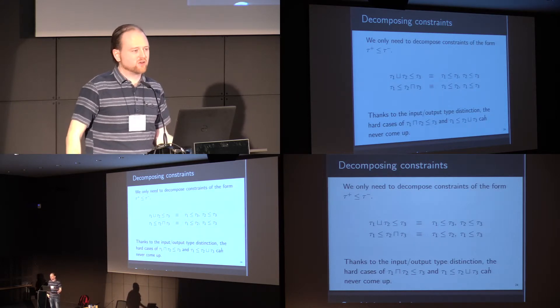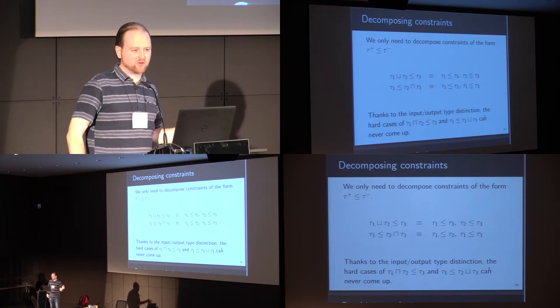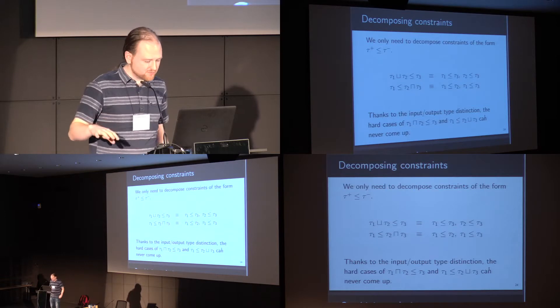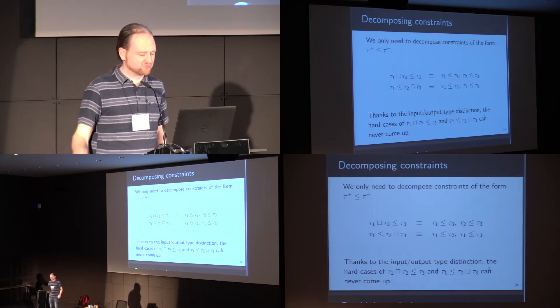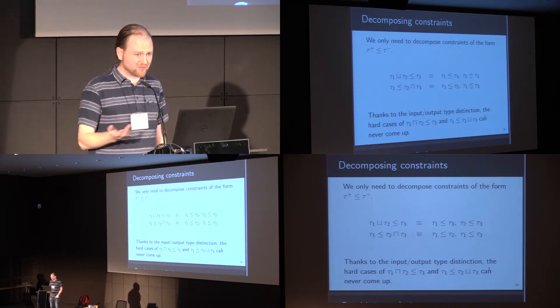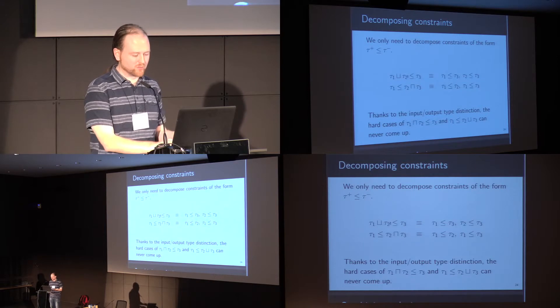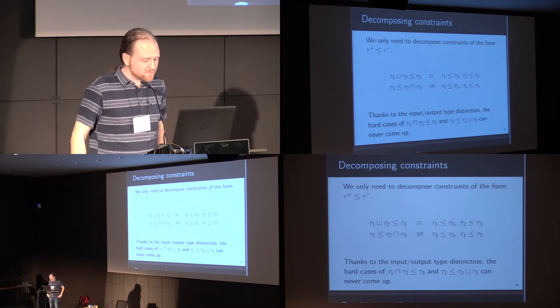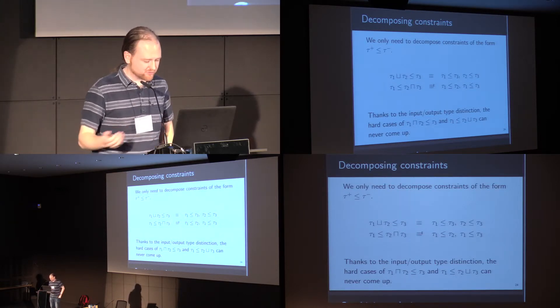Because we've ensured that upper bounds only ever occur in t-plus, they will only ever occur on the left of the subtyping constraint, and because lower bounds only ever occur in t-minus, those only ever occur on the right. Both of these cases are very easy to decompose, because we have these equations, that an upper bound on the left can just be split into two different constraints. The difficult cases of having a lower bound on the left or an upper bound on the right never come up because of the syntactic restrictions.